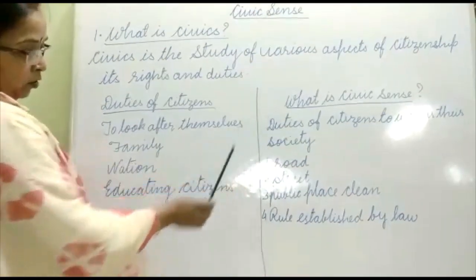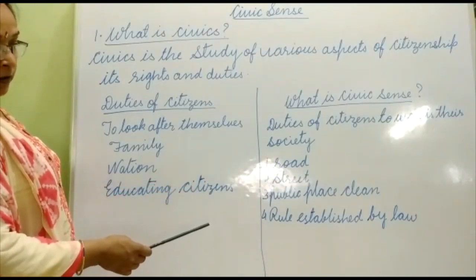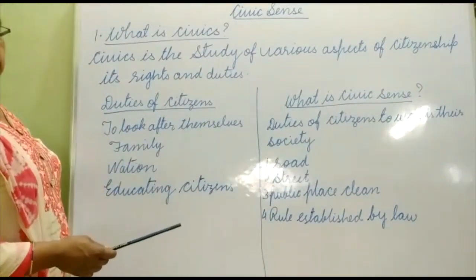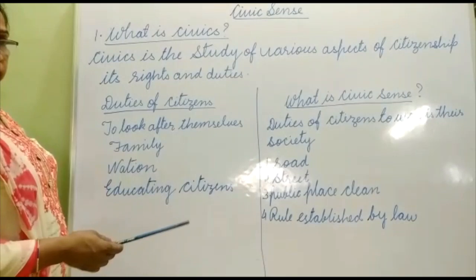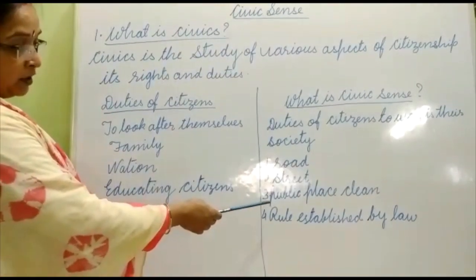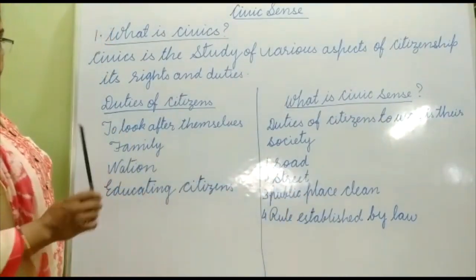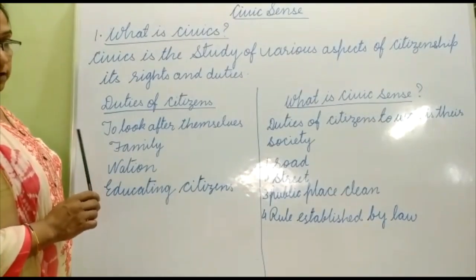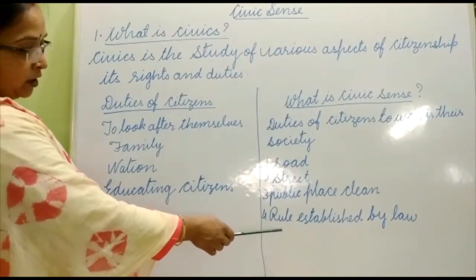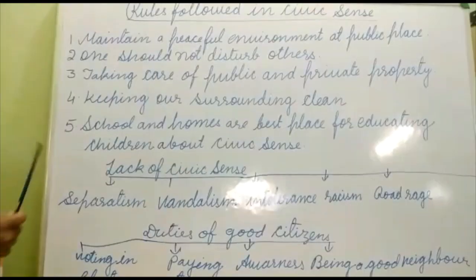Secondly, streets should be neat and clean — nothing rubbish should be there. Public places such as parks, museums, and swimming pools should be kept clean. Next, a proper citizen has the duty to follow the rules and regulations established by law.